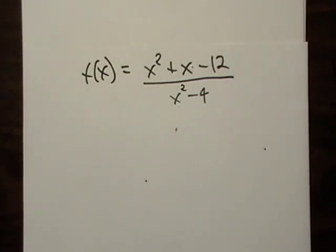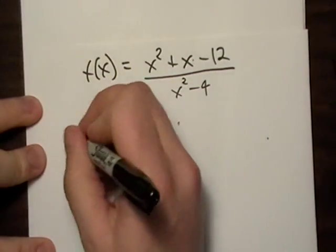I wanted to do one more graph on rational functions. This is just a little more complicated polynomial than the other one. Nothing has changed.